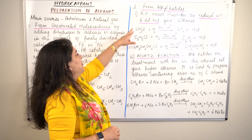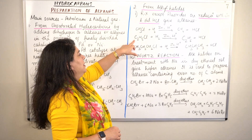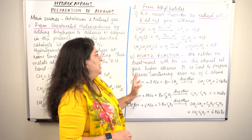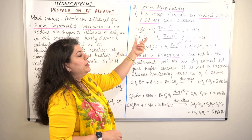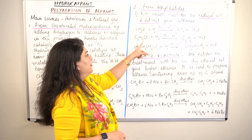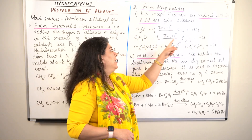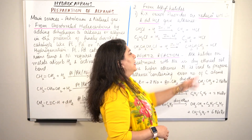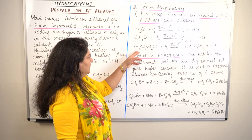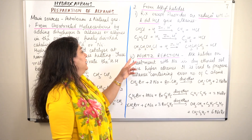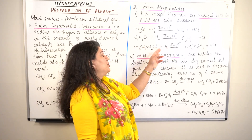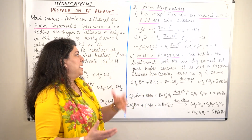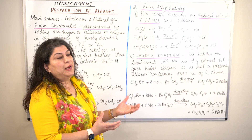Another example: C2H5Cl, that is chloroethane, also reacts with hydrogen in the presence of zinc and HCl. It results in the formation of the corresponding alkane C2H6, and the chlorine forms HCl — one hydrogen takes the place of chlorine. Similarly, chloropropane reacts with hydrogen in the presence of zinc and HCl to give propane and HCl. The same reaction takes place: replacement of chlorine by hydrogen.